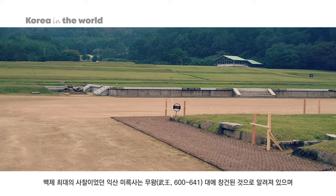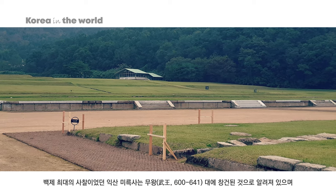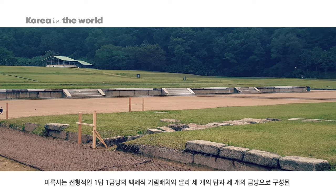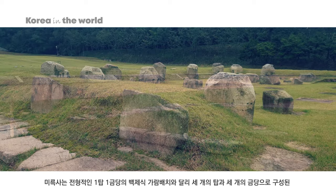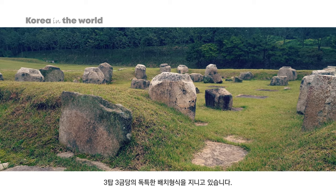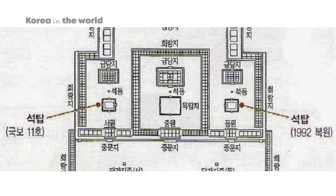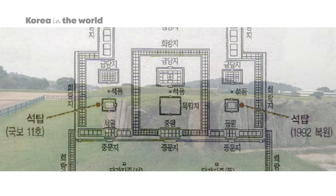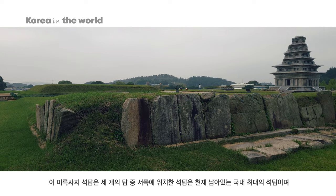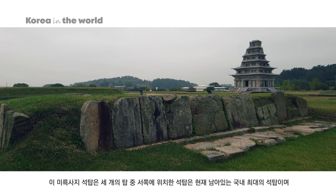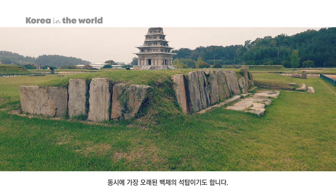백제 최대의 사찰이었던 익산 미륵사는 무왕 때에 창건된 것으로 알려져 있으며, 미륵사는 전형적인 1탑 1금당의 백제식 가람배치와 달리 3탑 3금당의 배치를 갖춘 독특한 구조입니다.